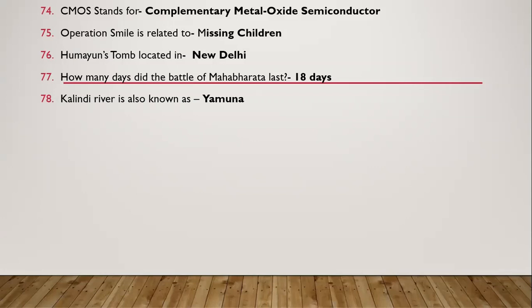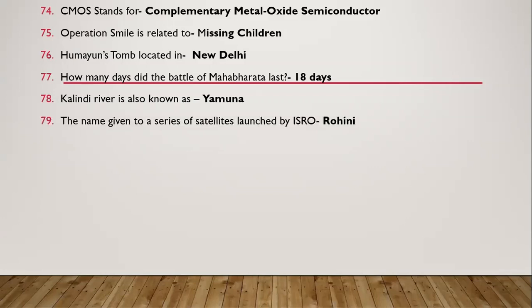Question 78: Kalindi River is also known as Yamuna. Question 79: The name given to a series of satellites launched by ISRO — the name was Rohini.